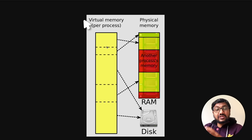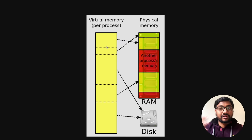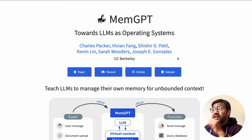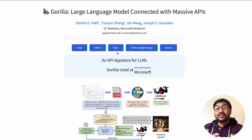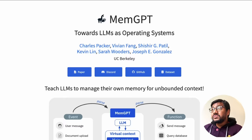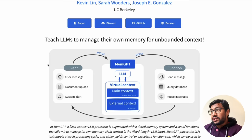This memory architecture has existed for many years — it's why we use computers, smartphones, and iPads. Now, what if you treat LLMs the same way? That's exactly what this paper does. It's called MemGPT: 'Towards LLMs as Operating Systems,' and some of its authors are from the Gorilla paper — a system connecting APIs with large language models.